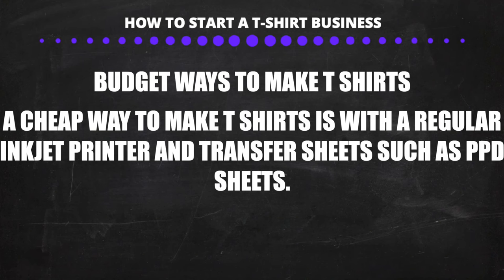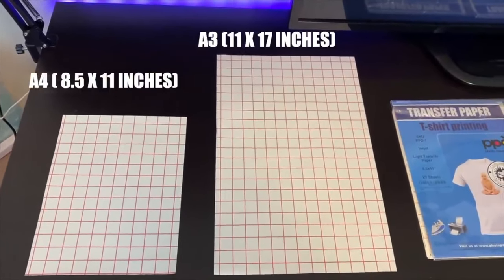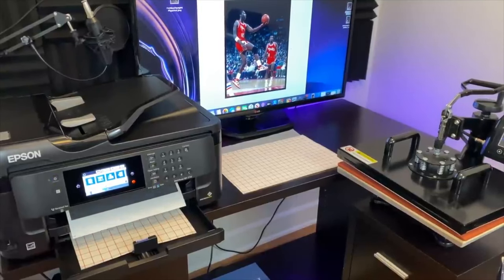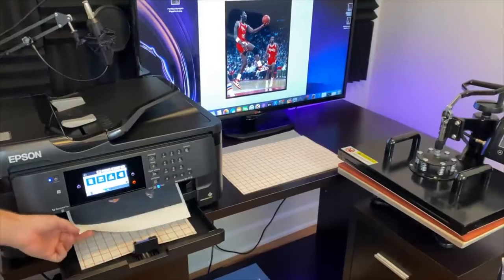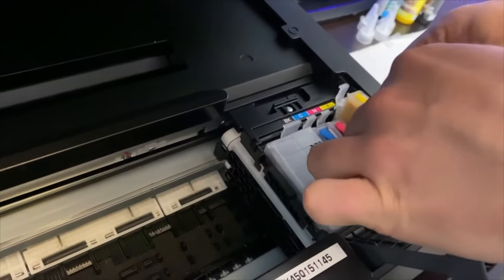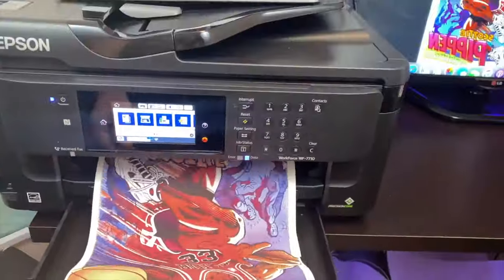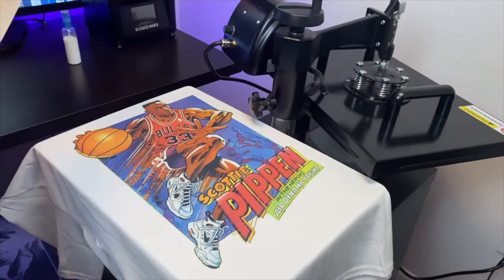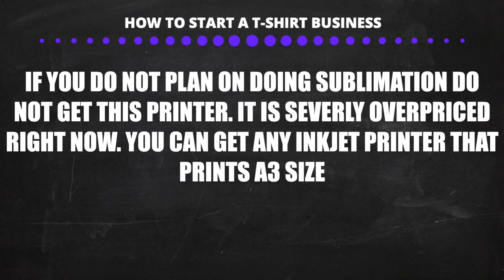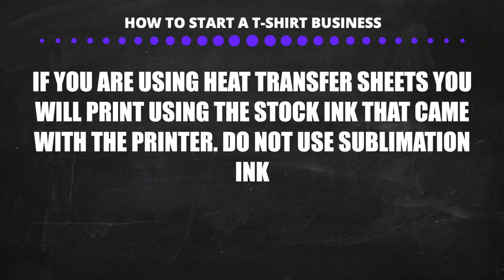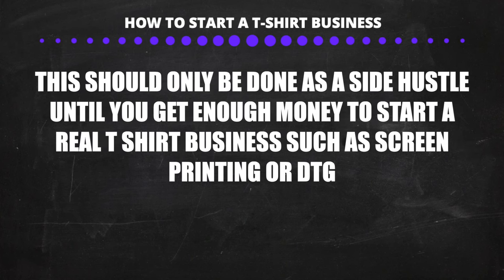Now let's talk about a couple of budget ways to make t-shirts. The first way is to get an inkjet printer and use transfer sheets. It's recommended you get a printer that prints A3, which is larger images — for example the Epson WF-7710. This printer can also be converted to a sublimation printer if you want to go that route. You can get a sublimation spray applied to a blank cotton t-shirt, print the sublimation print, press, and you have a sublimation t-shirt — but keep in mind this can only be done with white shirts. These printers recently went up in price, so if you don't plan to do sublimation, you can get any regular A3 printer for cheap. These are great ways to start a side hustle, but if you want a real t-shirt business, I suggest you save up and go with either DTG or screen printing.